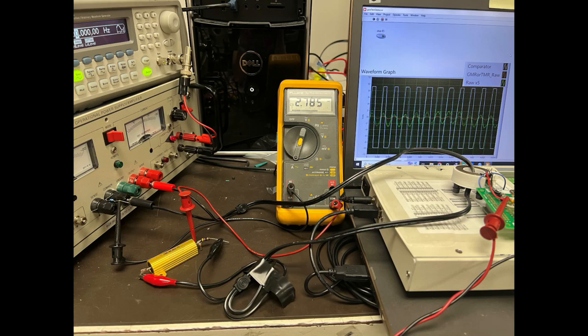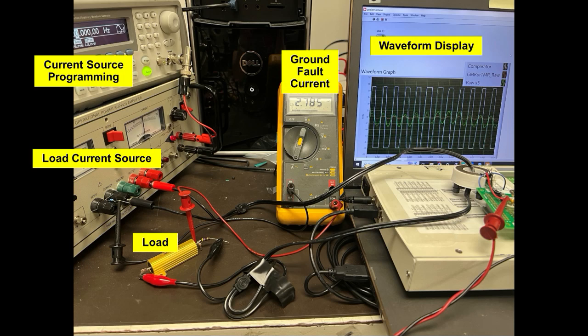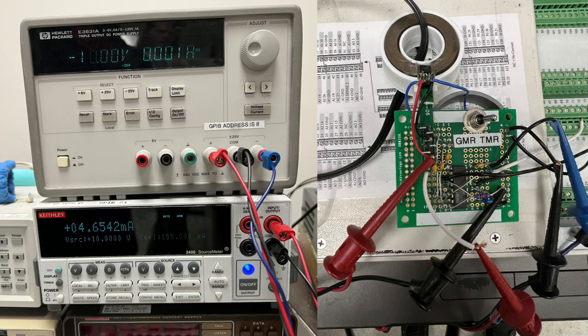Here's our setup. We're using a Kepco power supply to run AC current through a dummy load and we're splitting the current with resistors to simulate a ground fault condition. Here's the test board and power supplies.